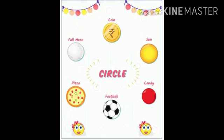Let us now see the various objects that are circle in shape. Coin, sun, candy, football, pizza, full moon are circle in shape.